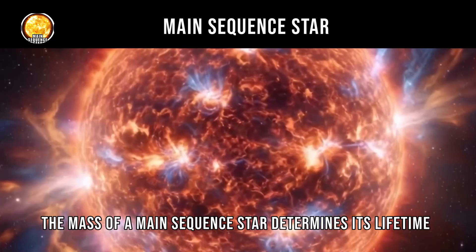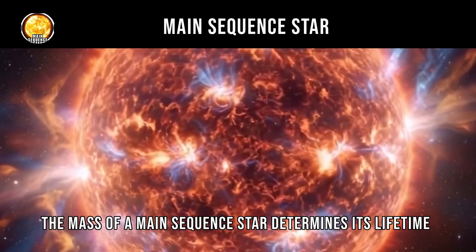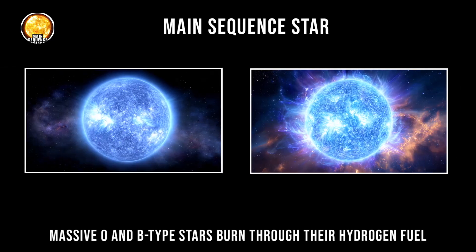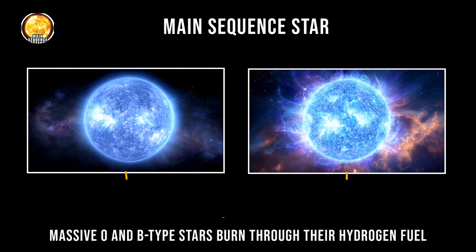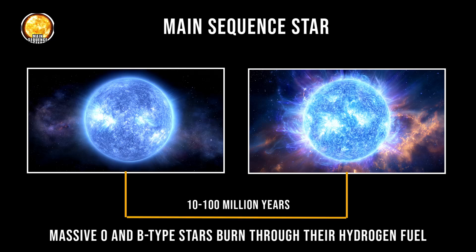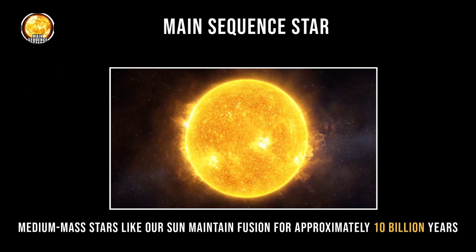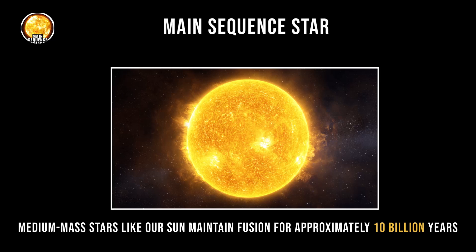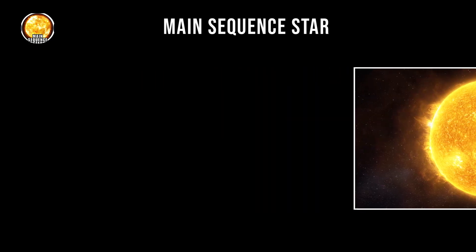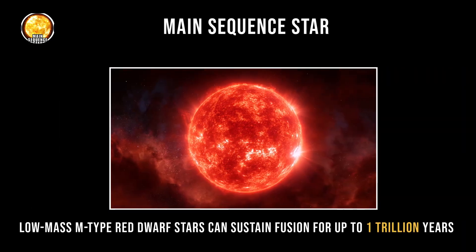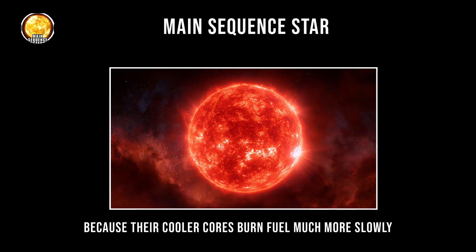The mass of a main sequence star determines its lifetime. Massive O- and B-type stars burn through their hydrogen fuel in just 10 to 100 million years due to their extreme core temperatures. Medium-mass stars, like our sun, maintain fusion for approximately 10 billion years. Low-mass M-type red dwarf stars can sustain fusion for up to 1 trillion years because their cooler cores burn fuel much more slowly.